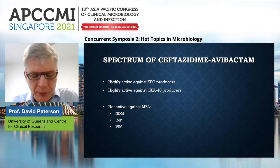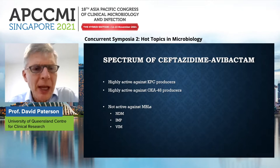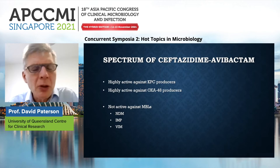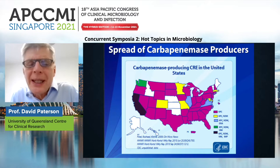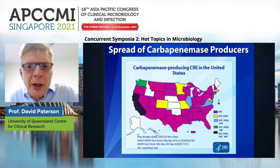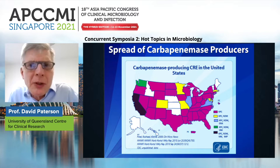But does ceftazidime-avibactam affect every different carbapenemase? The answer is clearly no. While it is active against KPC producers and OXA-48 producers, it is not active against metallobetalactamases — MBLs — such as NDM, IMP, or VIM. This is one key reason why we should be trying to type carbapenemases, so we can determine which organisms may benefit from ceftazidime-avibactam and in which we need to go back to colistin. In the United States, KPC absolutely dominates, so it would be a reasonable bet to use ceftazidime-avibactam empirically.